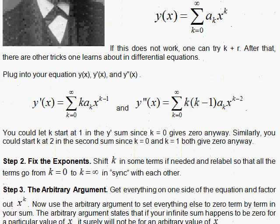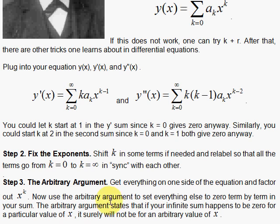Then you can use the arbitrary argument. Step 3, the arbitrary argument, where you pull the x to the k out to the far right. And since the sum is equal to 0, and the x's are arbitrary,